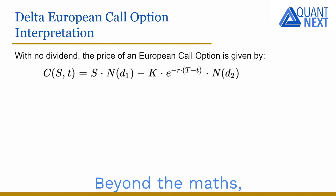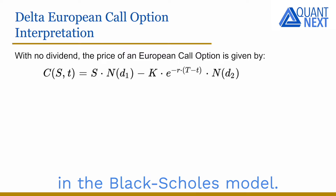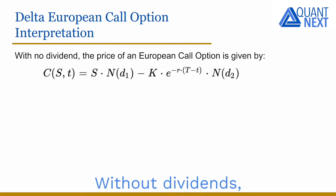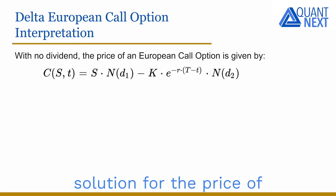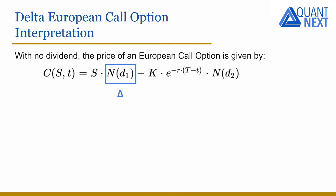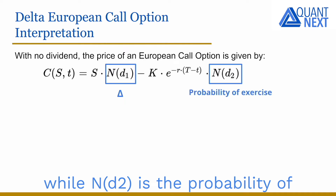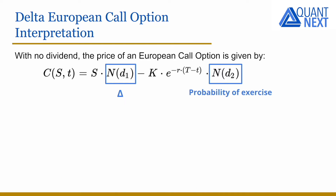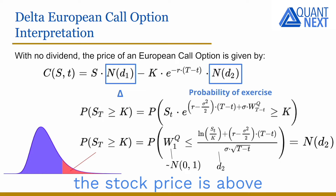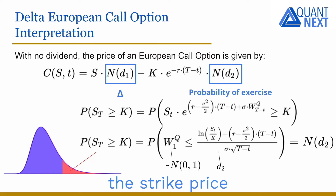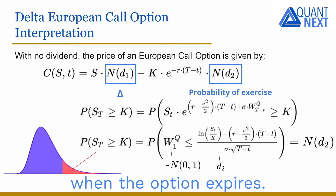Beyond the maths, there is an interesting interpretation of the delta in the Black-Scholes model. Without dividends, we have the following closed-form solution for the price of a call option. N of D1 is the delta, while N of D2 is the probability of exercise of the option — the probability that the stock price is above the strike price when the option expires.